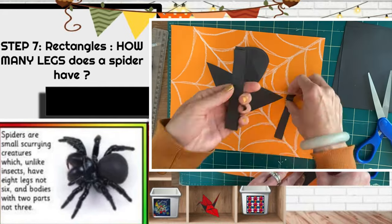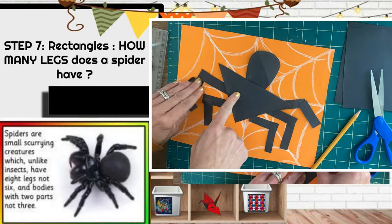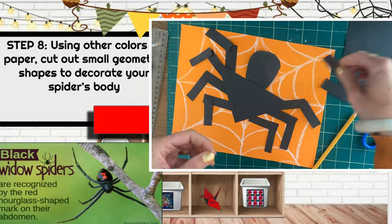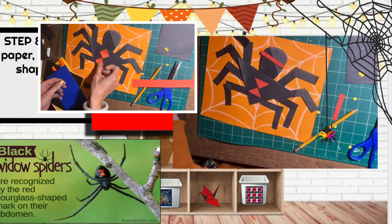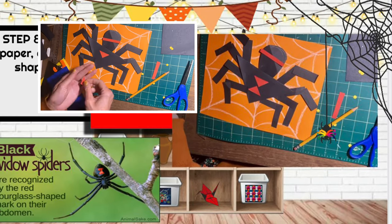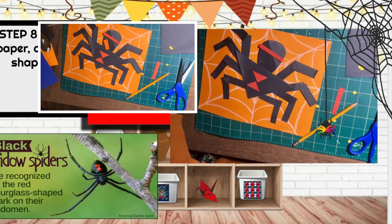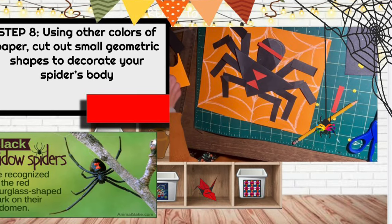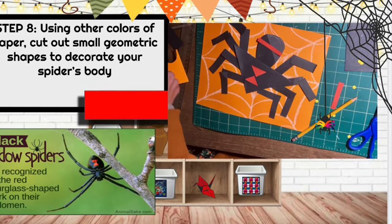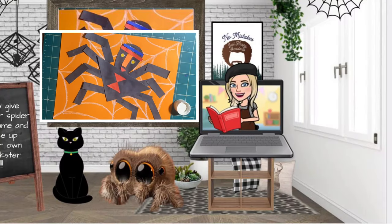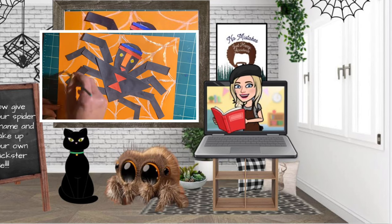I also used rectangles to make the eight legs of my spider. Then I used some different colors of paper to add details to my spider, like a face and a pattern on its belly. I actually made my spider look kind of like a black widow with the red hourglass on its abdomen. So get creative and make a cool face for your spider!